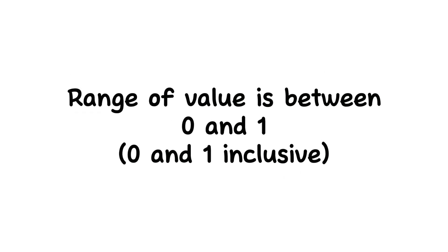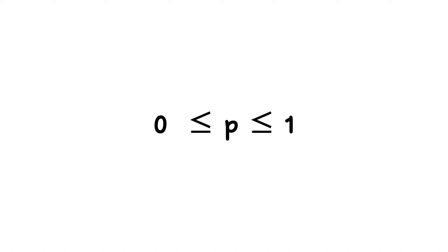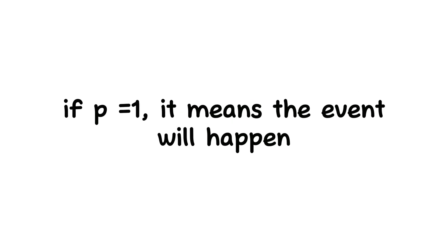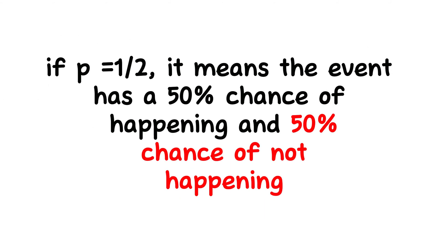The probabilistic value of events can take a range of values between zero and one, with both zero and one included. We write this as: 0 ≤ P ≤ 1. If the probabilistic value of an event equals zero, it means the event is certain not to happen. If it equals one or 100%, we are very certain the event will happen. If the probabilistic value equals 50%, there is a half chance the event will happen and a half chance it will not.